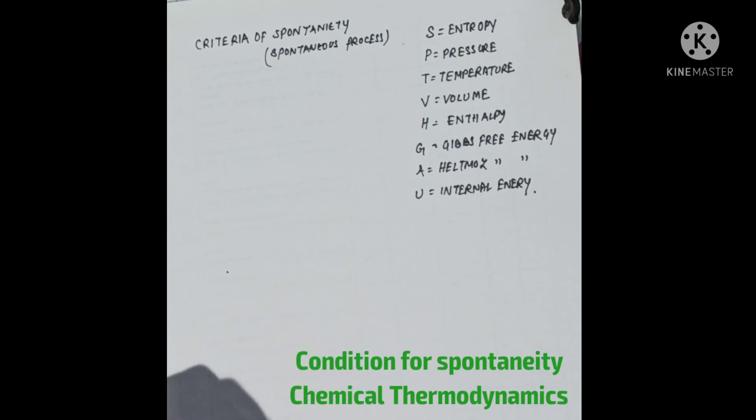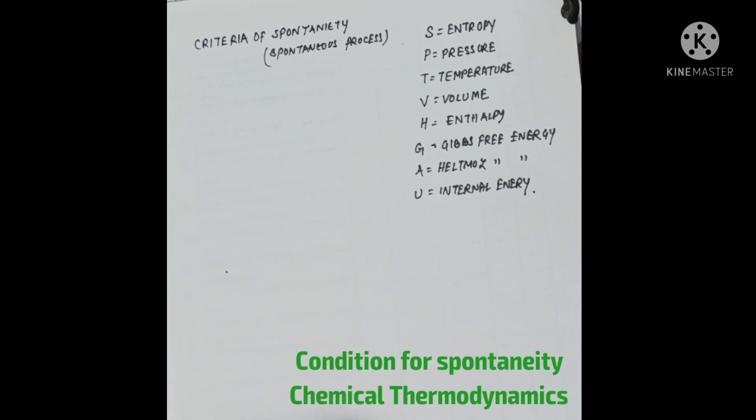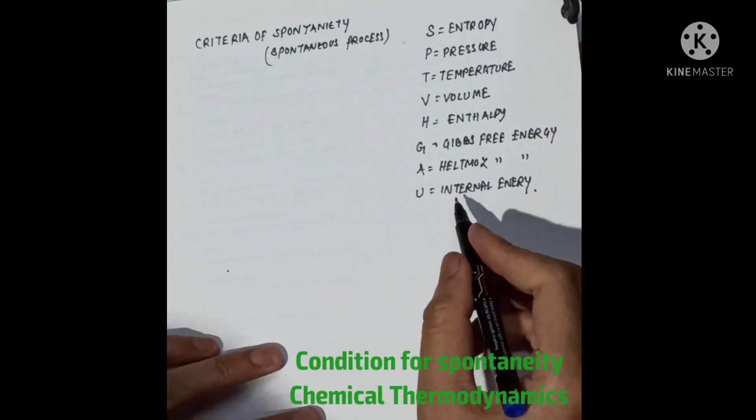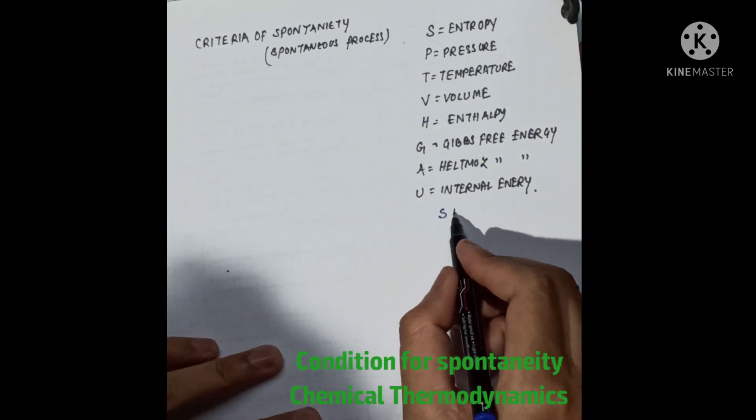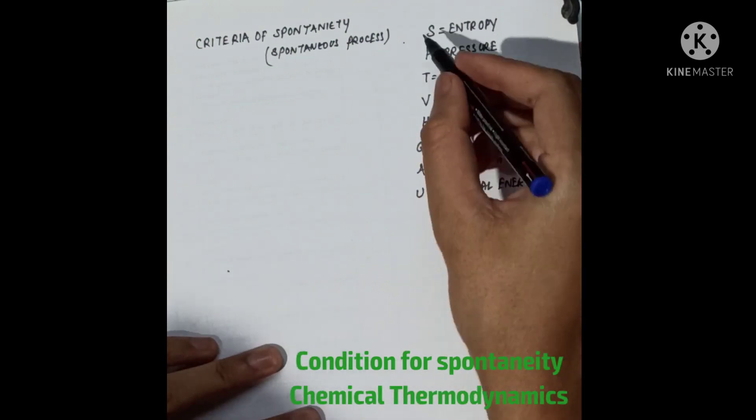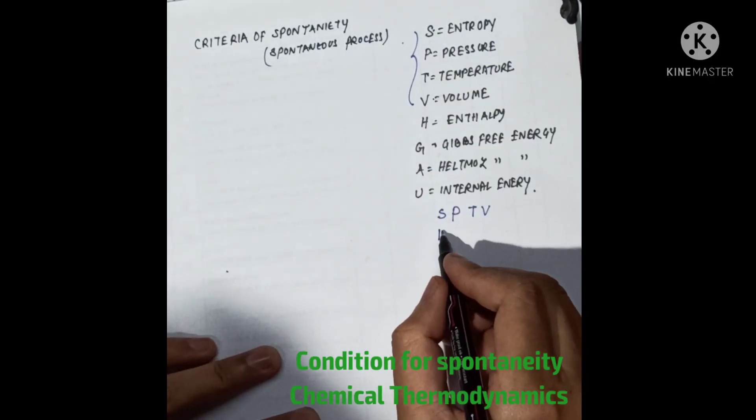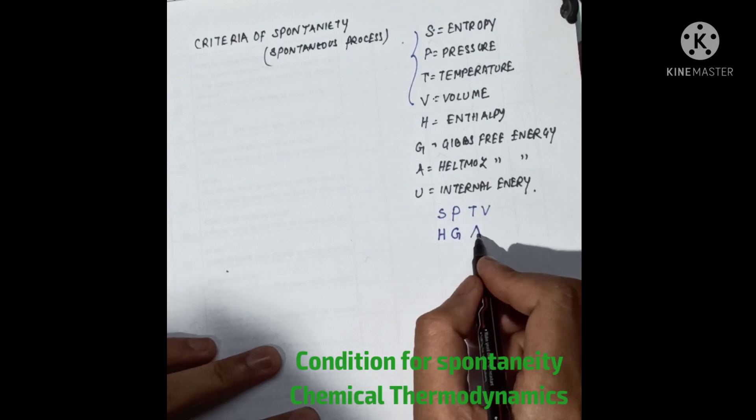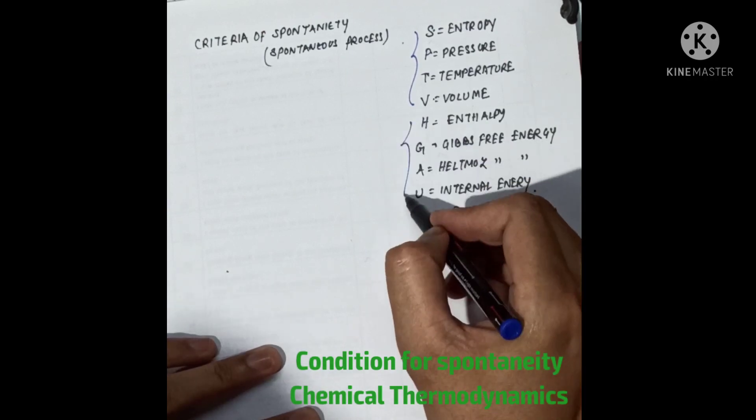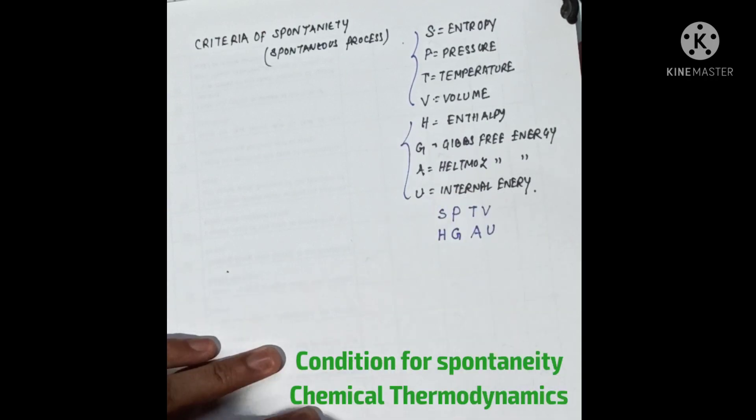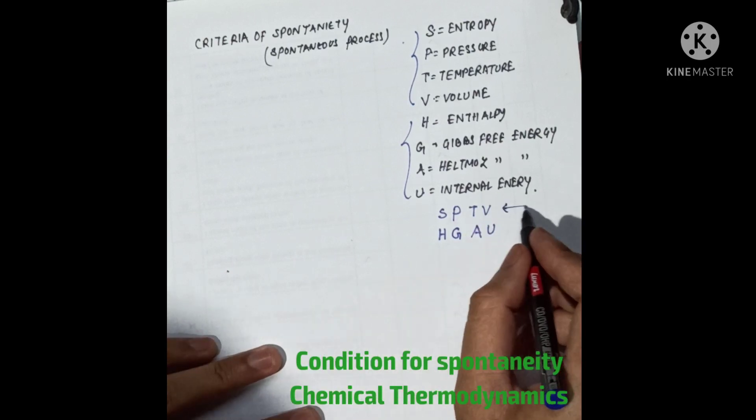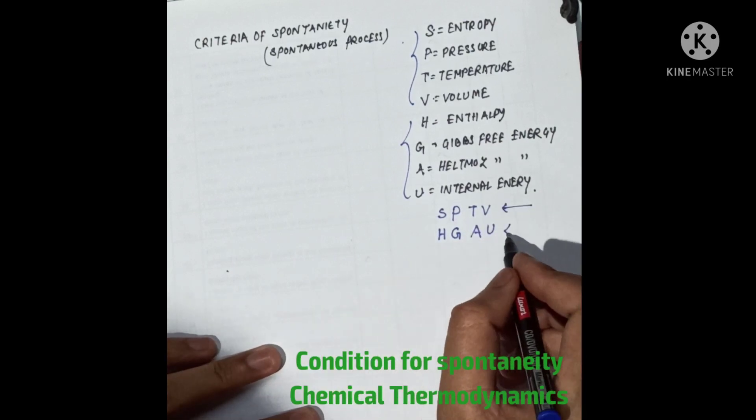Based on this, let's find out the conditions required for a spontaneous process. For that, we have to study a sequence: SPTV. This is the first four I have written, SPTV. And the second sequence is HZAU. Remember this: SPTV, HZAU.